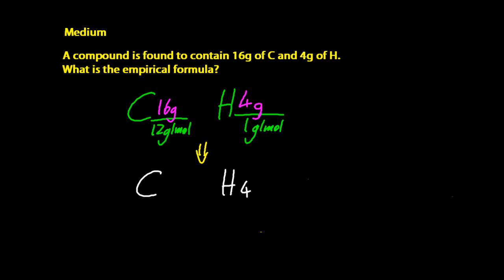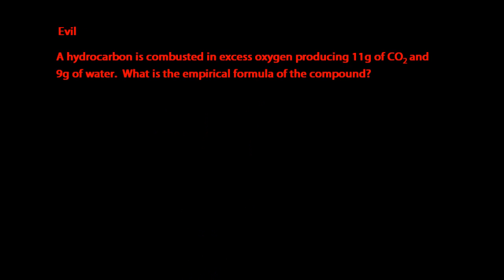Again, you want to divide by the smallest number, 1.33, and that should give you the answer or close to it, and then you can fix it. C1H3, excellent. So the simplest ratio between carbon and hydrogen is one carbon for three hydrogens.